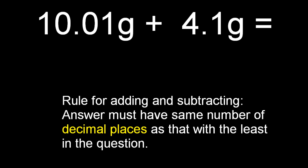Adding and subtracting, the answer must have the same number of decimal places as that with the least in the question. So this is 14.11 grams, but let's just follow the rules. That has two decimal places, that has one. So my answer should only have one decimal place, leaving me with 14.1 grams.